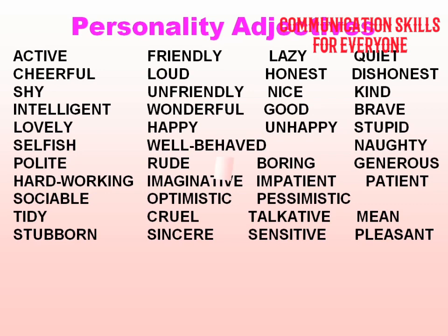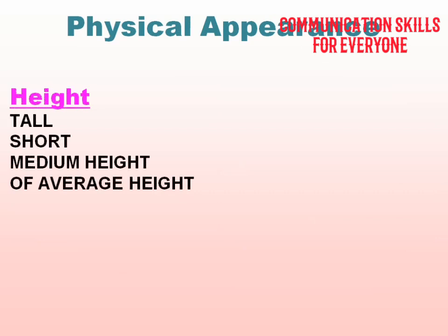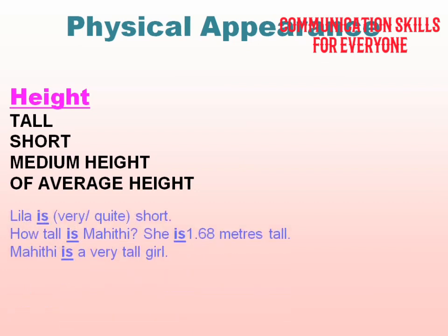Now let's look at physical appearance. First comes height — is the person tall, short, medium height, or of average height? For example: Carly is very short or quite short. How tall is Mighty? She is 1.68 meters tall.